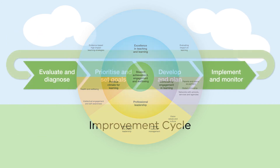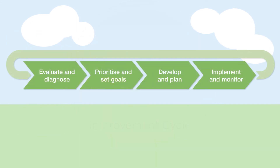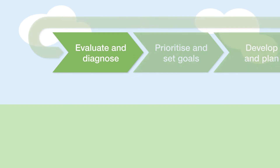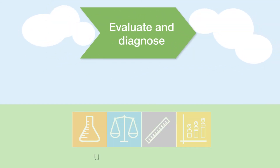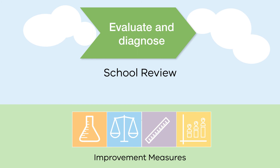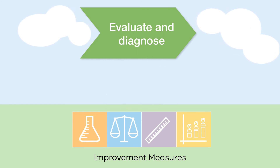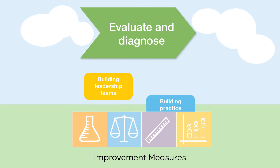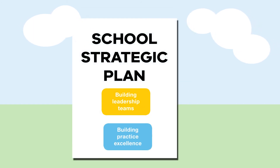Schools use the improvement cycle to help make the selection. In the first step of the improvement cycle, schools use improvement measures to evaluate what is and isn't working. The results of this evaluation help schools identify which one or two initiatives from the improvement model to focus on.